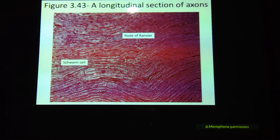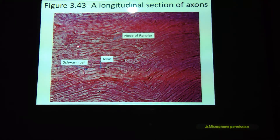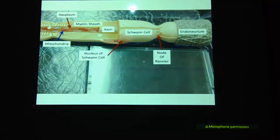The Schwann cells are the cells that you are seeing here. And the axons — see that stick in the middle? You can see it there and right there. That would be the axon itself, just like what we see here with the Schwann cell and then that axon dead center in the middle.